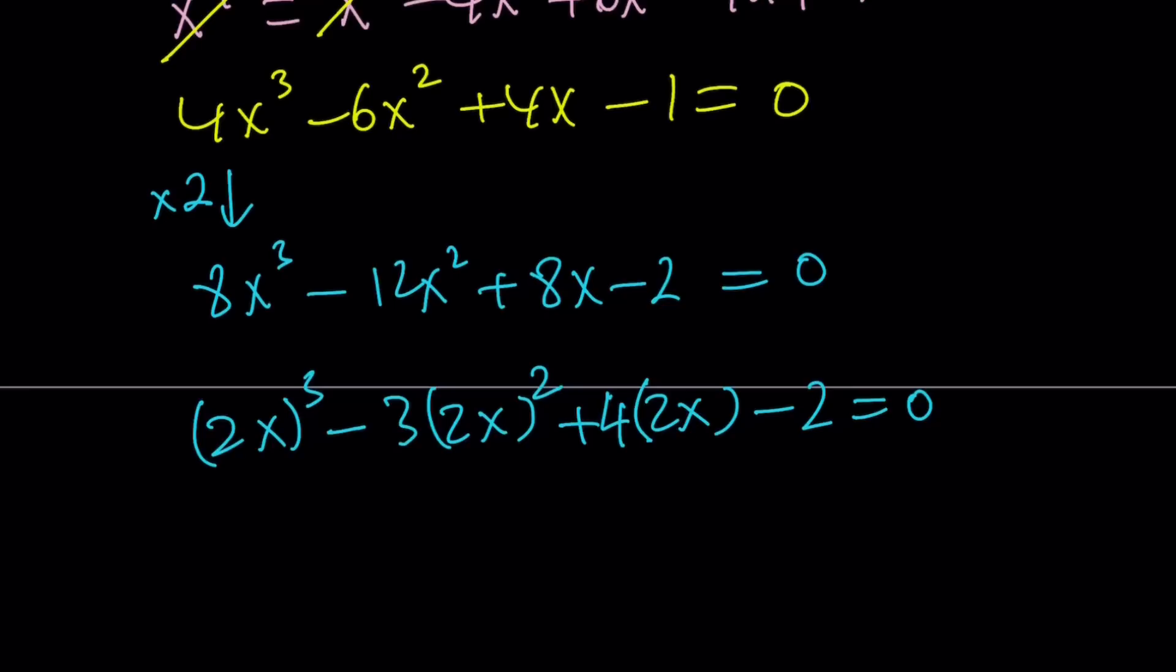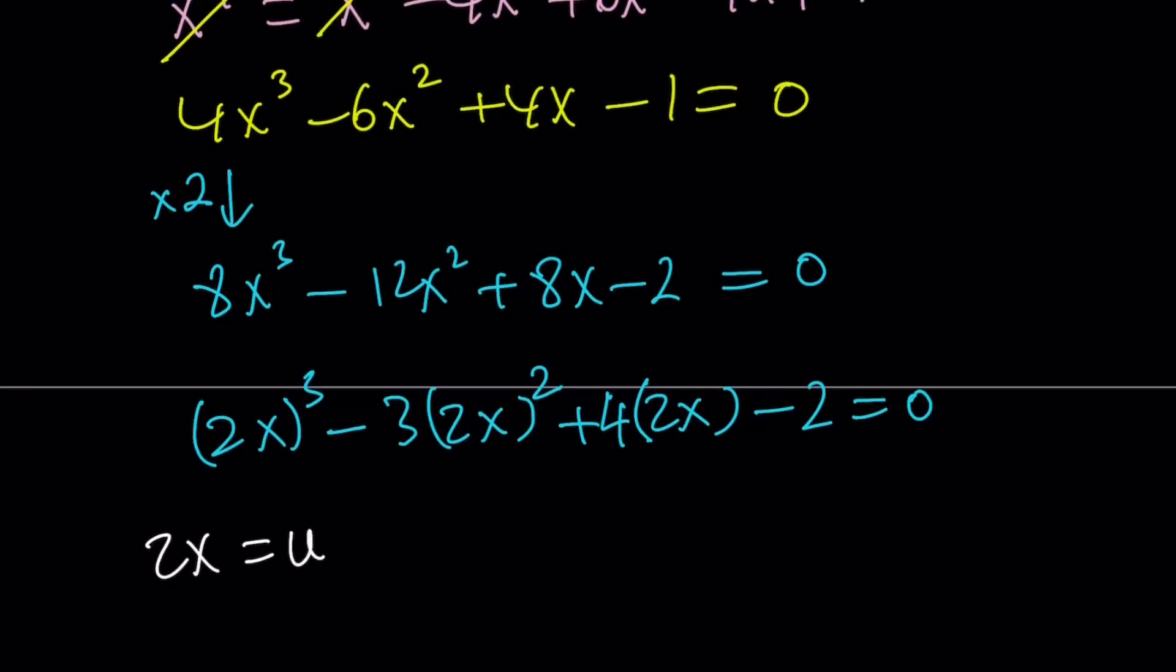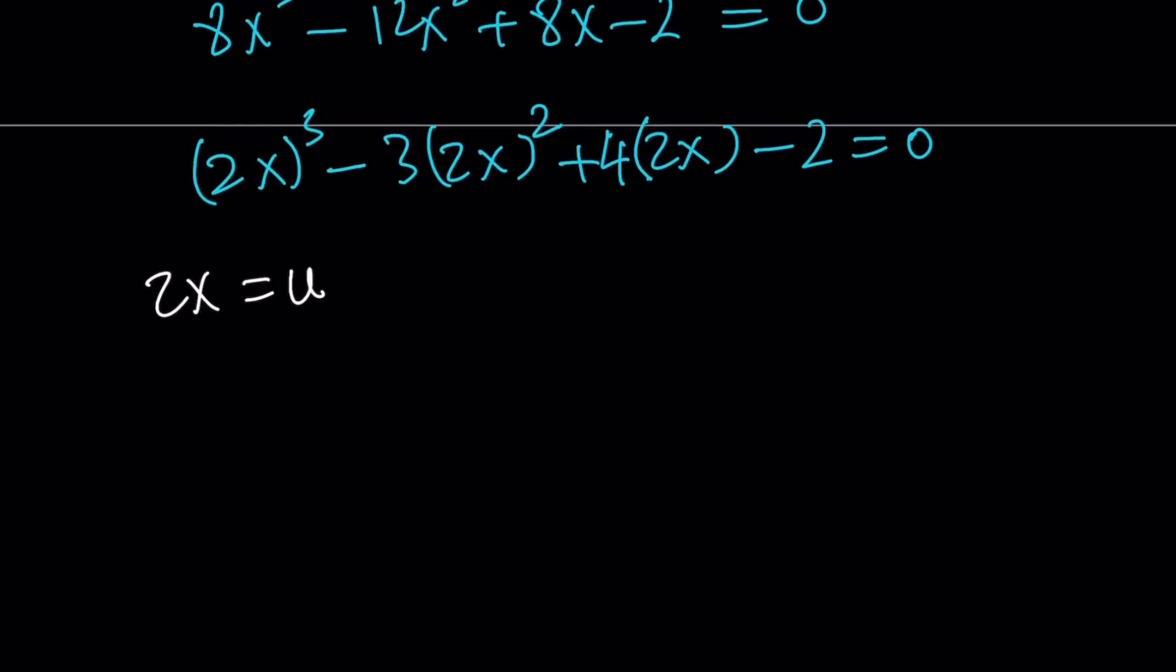What am I going to do next? 2x needs to be renamed. So let's call it u. So if 2x is equal to u, what happens? We get a nicer equation. Actually, the reason why it's called a nicer equation is because it's monic. Monic means the leading coefficient is 1. So those equations are actually nicer. This is u³ - 3u² + 4u - 2 = 0.